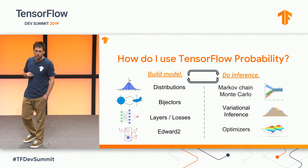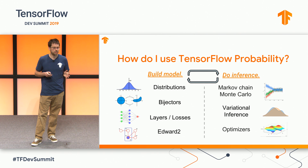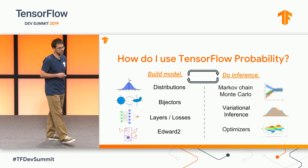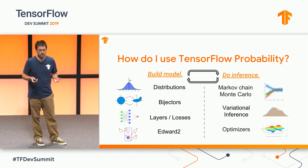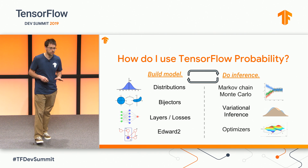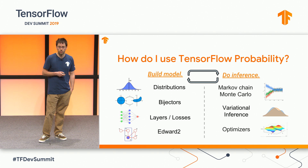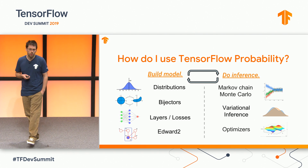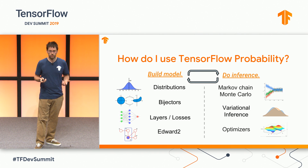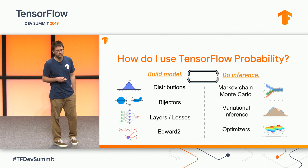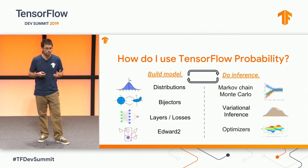We saw one small part of TFP. Broadly, the tools are broken into two components: those useful for building models and those for doing inference on those models. On the model-building side, you saw the normal distribution and the variational Gaussian process distribution. Distributions are collections of simple summary statistics, with support for batch shape to take advantage of vector processing hardware. We also have bijectors — a library for transforming random variables — such as taking the exp of a normal to get a log-normal, or transforming a random variable with a neural network, including mask autoregressive flows, real NVPs, and other sophisticated probabilistic models.